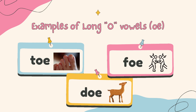Next, you have T, O — toe. F, O — foe. D, O — doe. Again, as you can see, the E here is very quiet. You can't hear it at all. So just say the O.